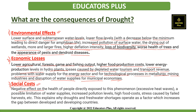Social costs include the negative effect on the health of people directly exposed to the phenomena, such as excessive heat waves and possible limitation of water supplies, increased pollution levels, high food costs, and stress caused by failed harvests. This explains why droughts and freshwater shortage operate as a factor which increases the gap between the developed and the developing countries.